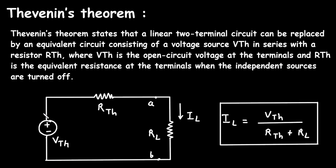RTH is Thevenin's resistor. VTH is the open circuit voltage at the terminals. We will obtain VTH by removing RL, as we will see in later steps. So VTH is the open circuit voltage at the terminals, and RTH is the equivalent resistance at the terminals when the independent sources are turned off.